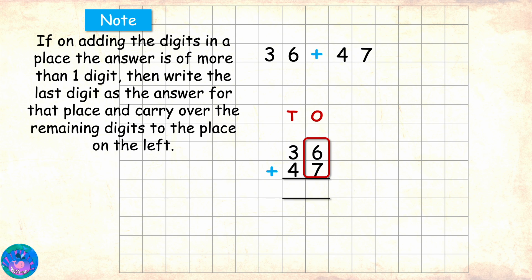On adding 6 and 7, we got 13. 3 is the last digit of 13, so we will write it down as the answer for the ones place. And carry forward the remaining digit 1 to the tens place.